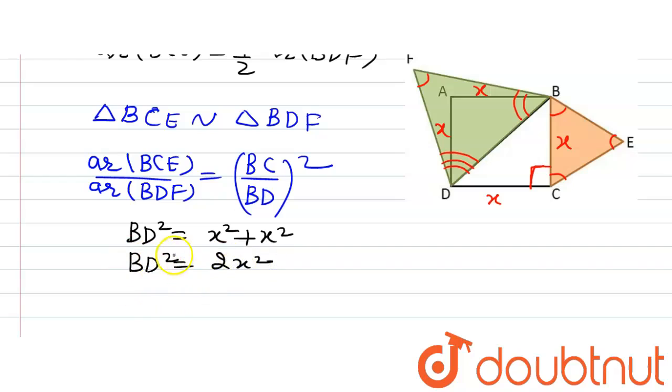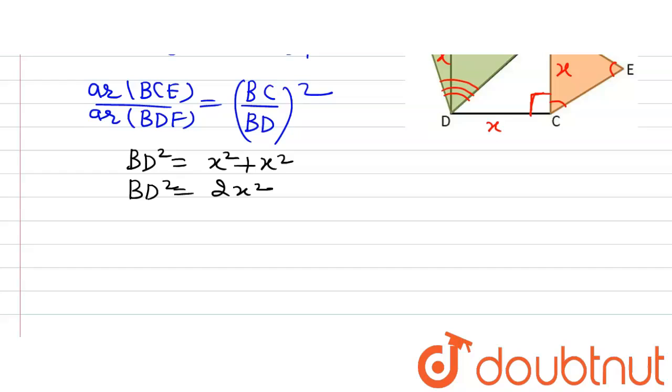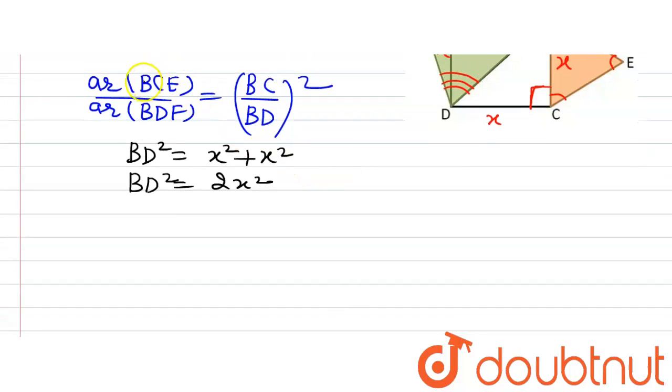So I have BD square is equal to 2X square. Now BC is equal to X because we have assumed all the sides of the square to be X.